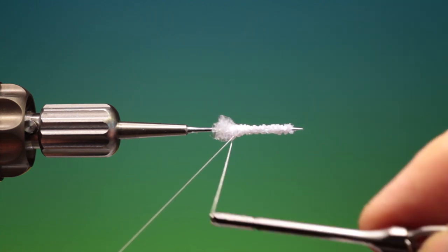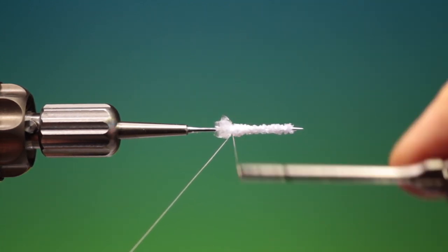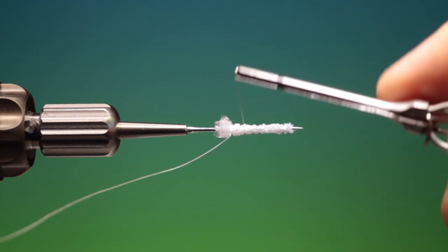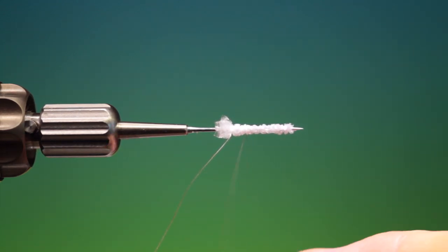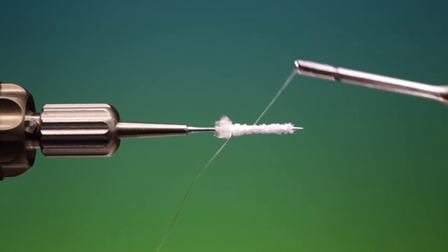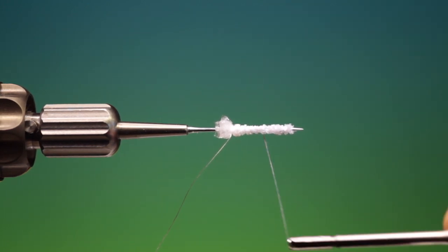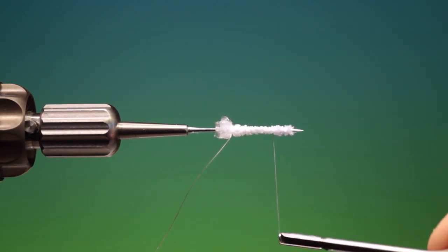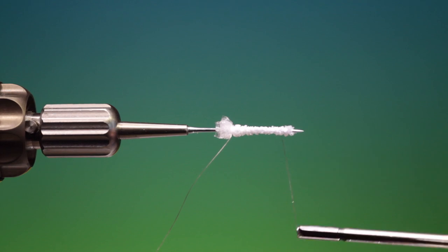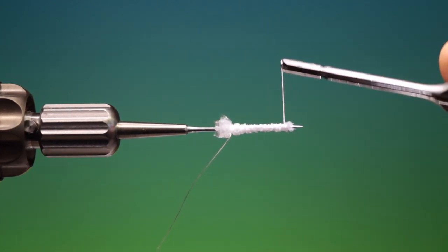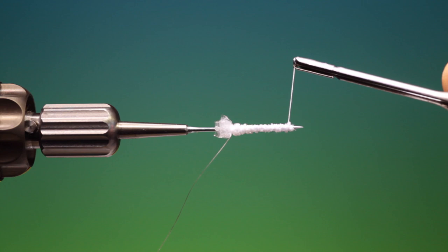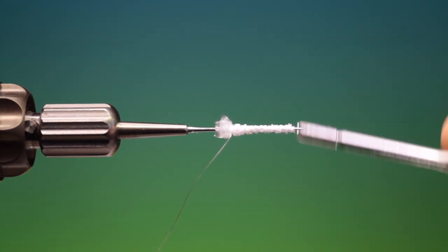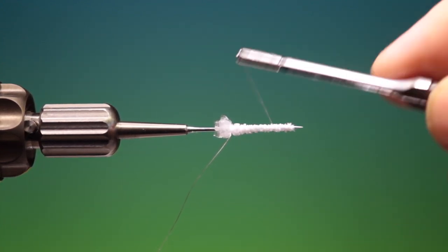So all we want to do here is just go down and we go back up. Remember to spin your thread anticlockwise to make it flat, that helps as well. So just go up here, try and get the necessary taper on the body as you go.